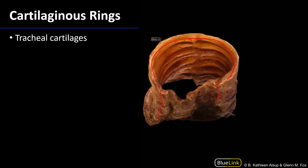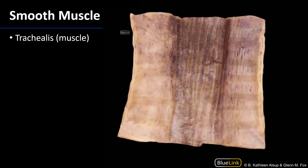The posterior wall of the trachea is without cartilage — it's formed of connective tissue and smooth muscle. When we incise those rings and open it up, we can see some of the elements of that smooth muscle, which we call the trachealis.